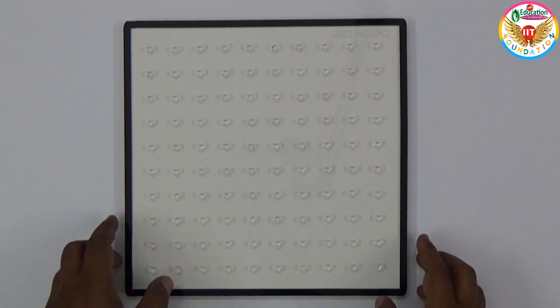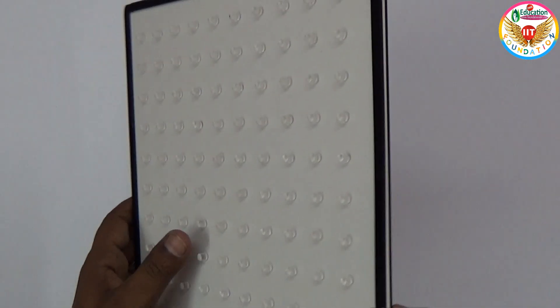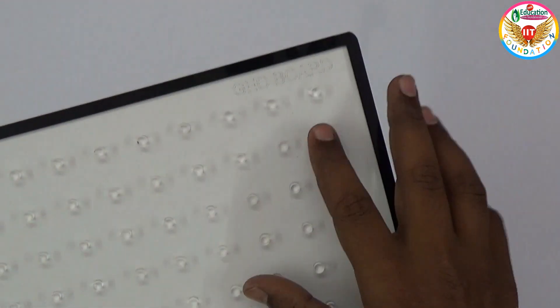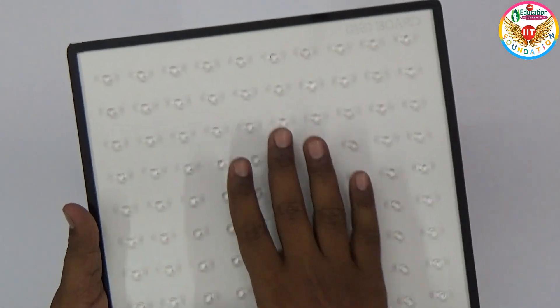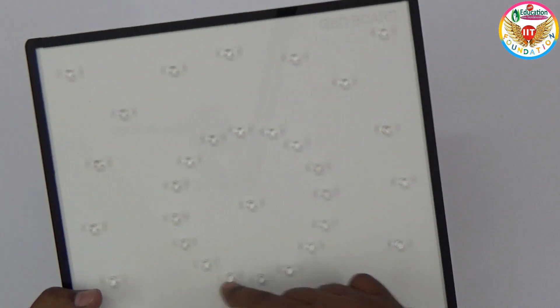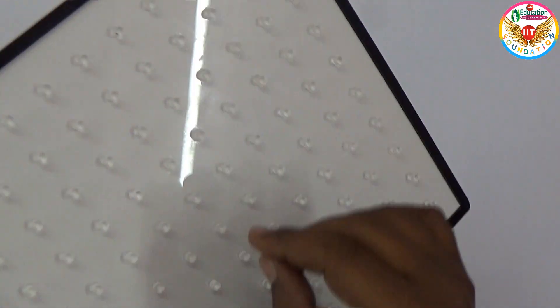Welcome to Education Channel. In this video I will show one model, a teaching model you can use for multi-purpose. This is the geo board. One side you can use for geometrical shapes and the other side you can explain all the properties of circle.